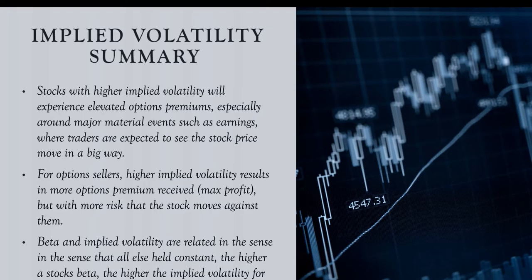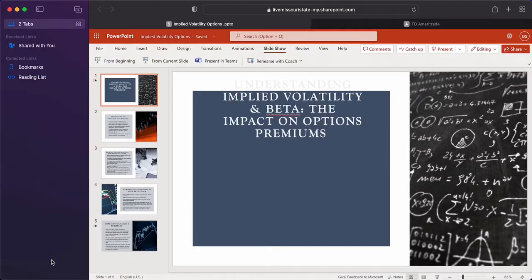Stocks with higher implied volatility will experience elevated options premiums, especially around major material events such as earnings where traders expect the stock price to move in a big way. For option sellers, higher implied volatility results in more options premiums received, which is your max profit if you're the seller — but you're taking the additional risk that the stock will move against you. Beta and implied volatility are related in the sense that all else held constant, the higher a stock's beta, the higher the implied volatility for that stock can be expected.